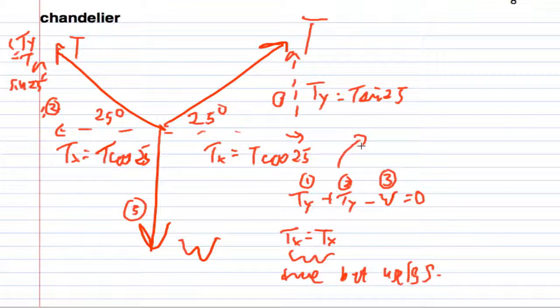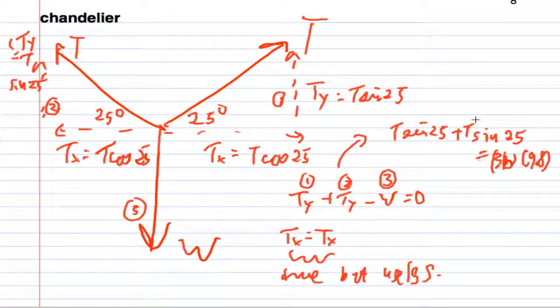So let me try to use this equation to get the answer to the question. So I'm going to have T sine of 25 plus T sine of 25 equals the weight, which is 36 kilograms times 9.8. So when I go ahead and solve this, I'm actually going to end up getting 2T sine of 25 equals 36 times 9.8.